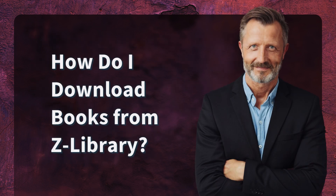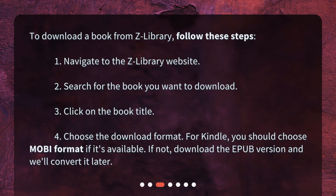How do I download books from zLibrary? To download a book from zLibrary, follow these steps. 1. Navigate to the zLibrary website. 2. Search for the book you want to download. 3. Click on the book title. 4. Choose the download format.